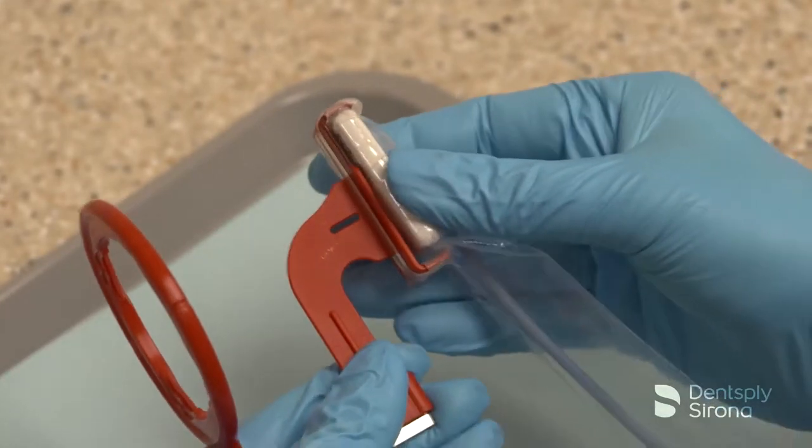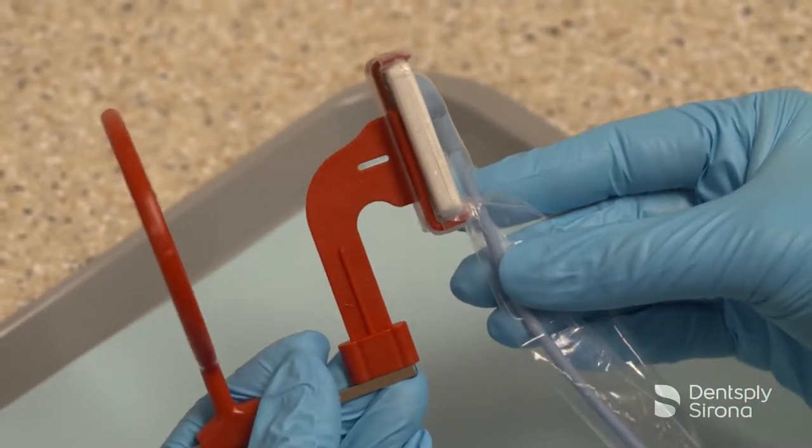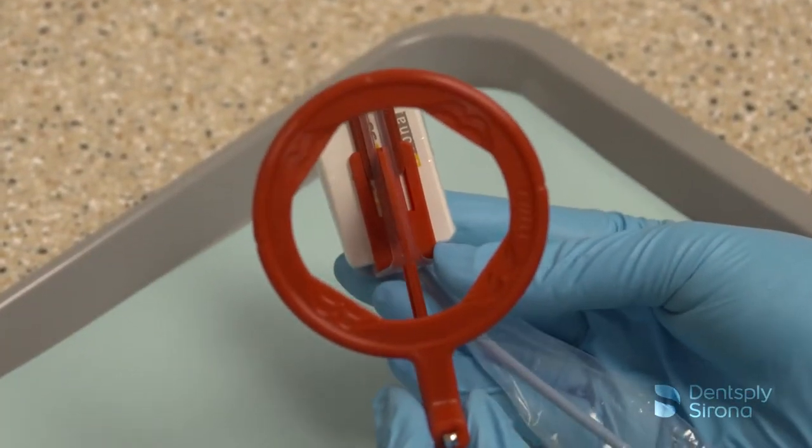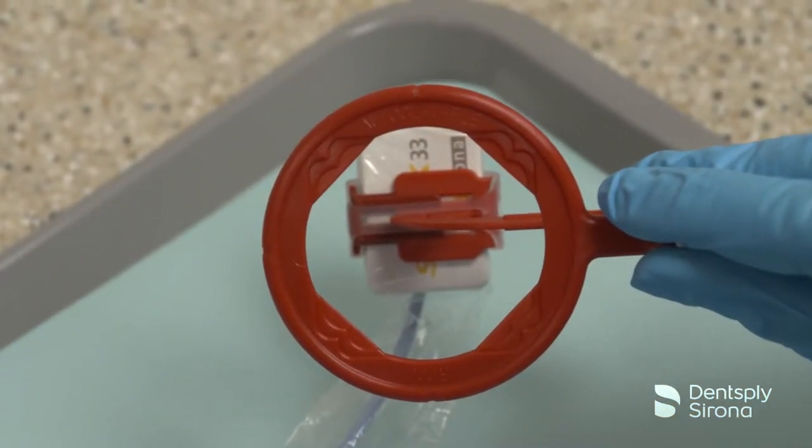Securely insert the sensor into the red bite block, making sure that the active side of the sensor is against the flat surface of the bite block. If taking horizontal images, the sensor will be placed into the bite block in the horizontal position, and in a vertical position if capturing vertical bitewings.